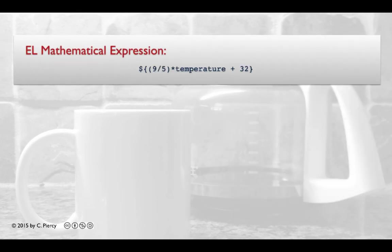Let's see a few examples of these in action. Here's an example of a mathematical expression that would calculate the Celsius temperature from a given Fahrenheit temperature. Notice it looks just like a Java mathematical expression and uses all the basic operators. And even a page level variable.